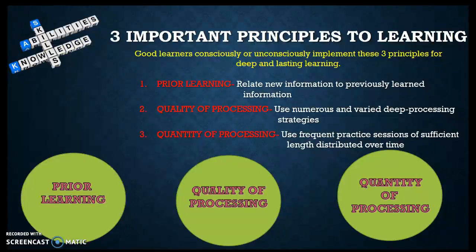There are three very important principles to learning: prior learning, quality of processing, and quantity of processing. Prior learning is information that you can relate to new information — something you already know or have previously learned, and how it can be related to your new subject area.